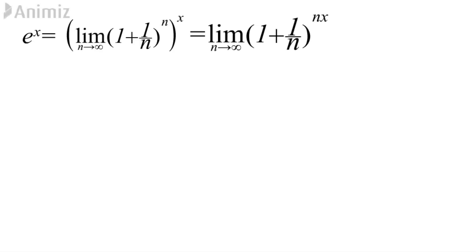Now let us focus on e^x. We know that e = lim(n→∞) (1 + 1/n)^n, so e^x must be that expression raised to the power x. Since x is independent of n and n is independent of x, the limit comes out and it becomes lim(n→∞) (1 + 1/n)^(nx).